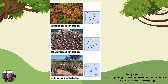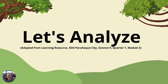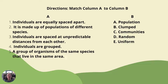Here are examples of the three distributions: Random, Uniform, and Clumped. Let's analyze. Directions: Match Column A to Column B. 1. Individuals are equally spaced apart. 2. It is made up of populations of different species. 3. Individuals are spaced at unpredictable distances from each other. 4. Individuals are grouped. 5. A group of organisms of the same species that live in the same area.